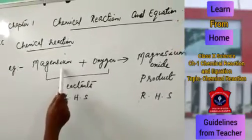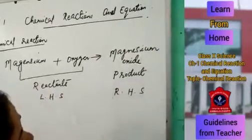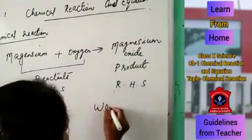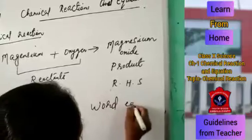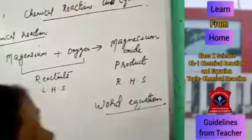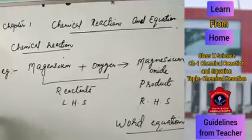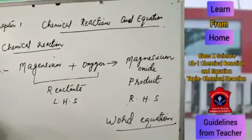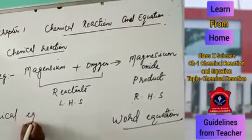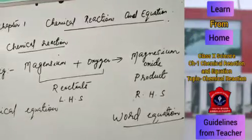You can see here: magnesium — complete name, oxygen — complete name, magnesium oxide — full name. This type of chemical equation is known as a word equation. It is not very convenient to always write equations in word form. So we use the symbolic representation of a chemical reaction, which is the chemical equation. Symbolic representation of a chemical reaction is a chemical equation.